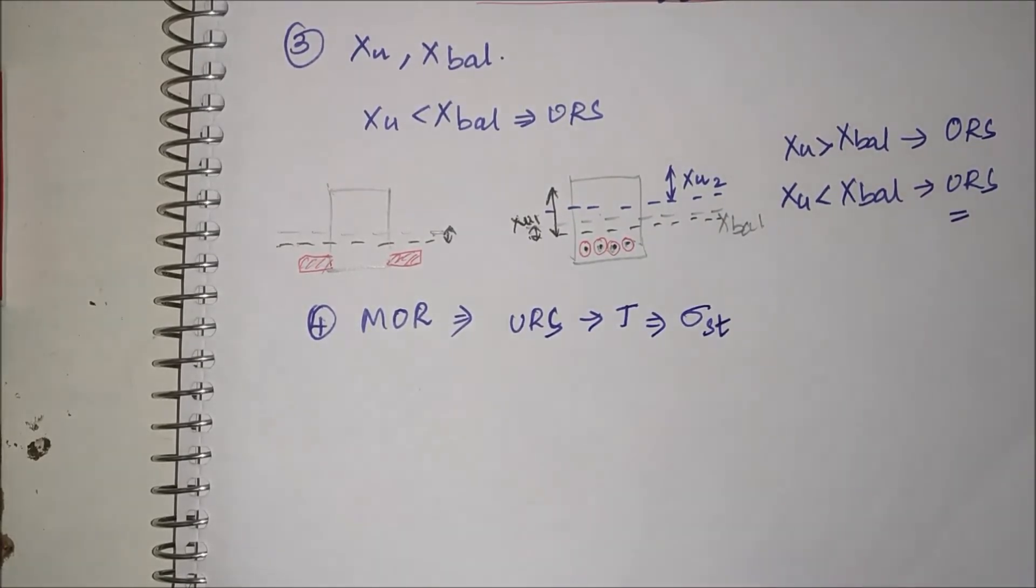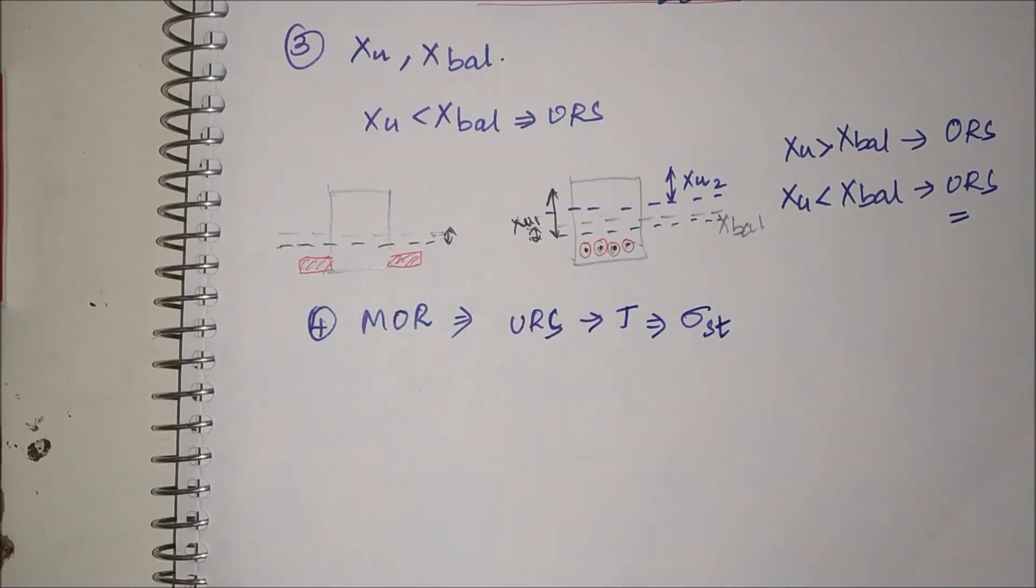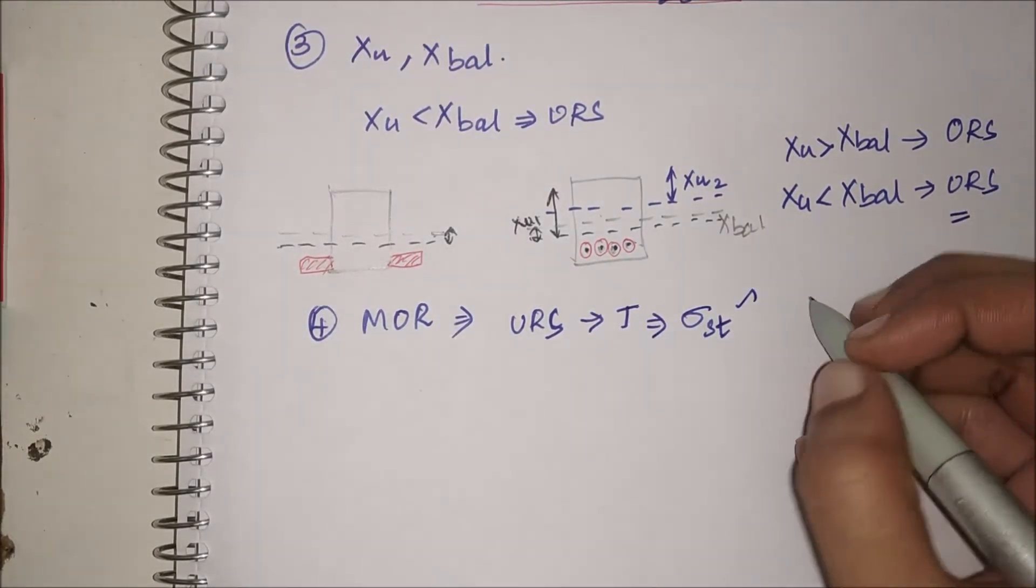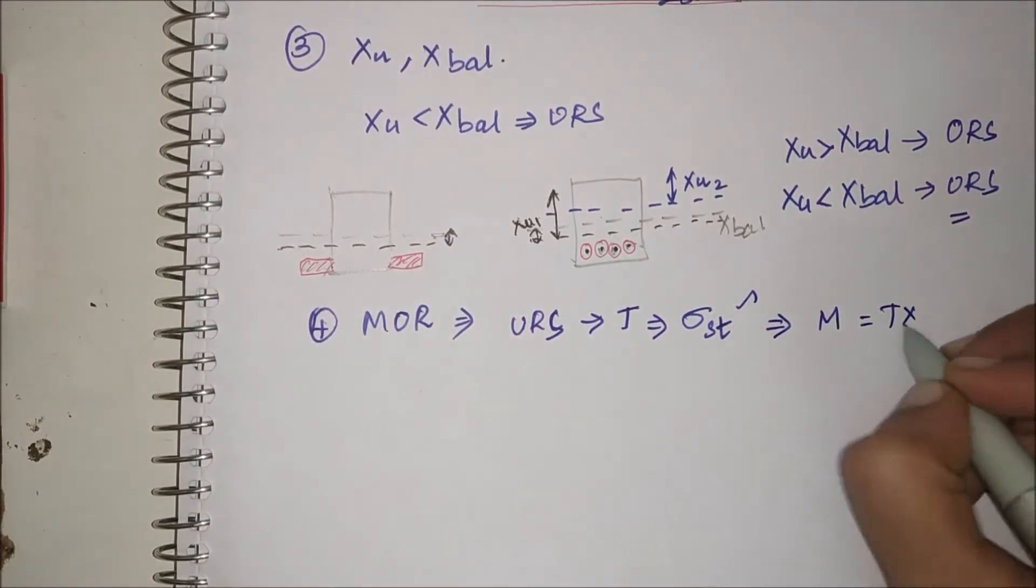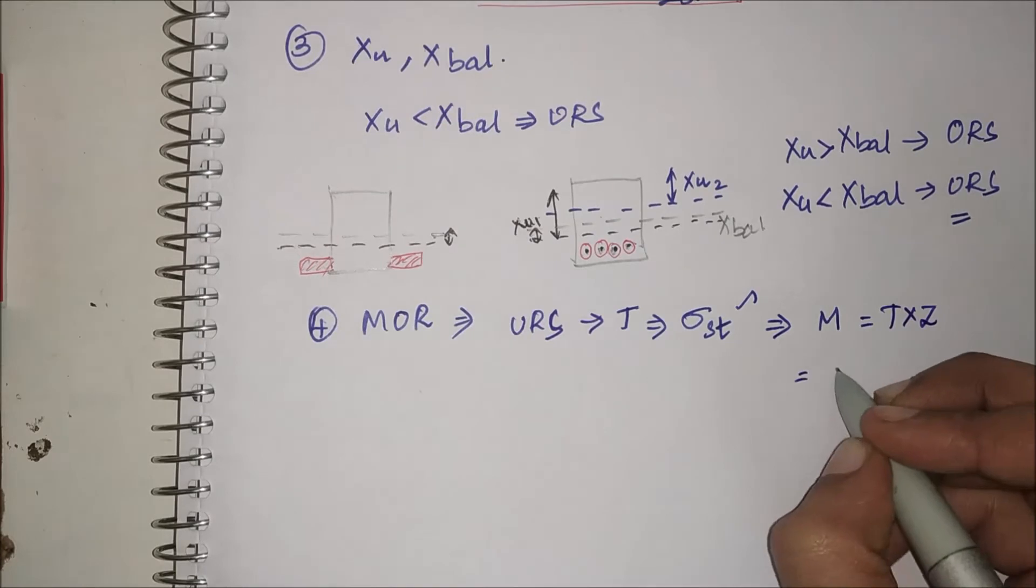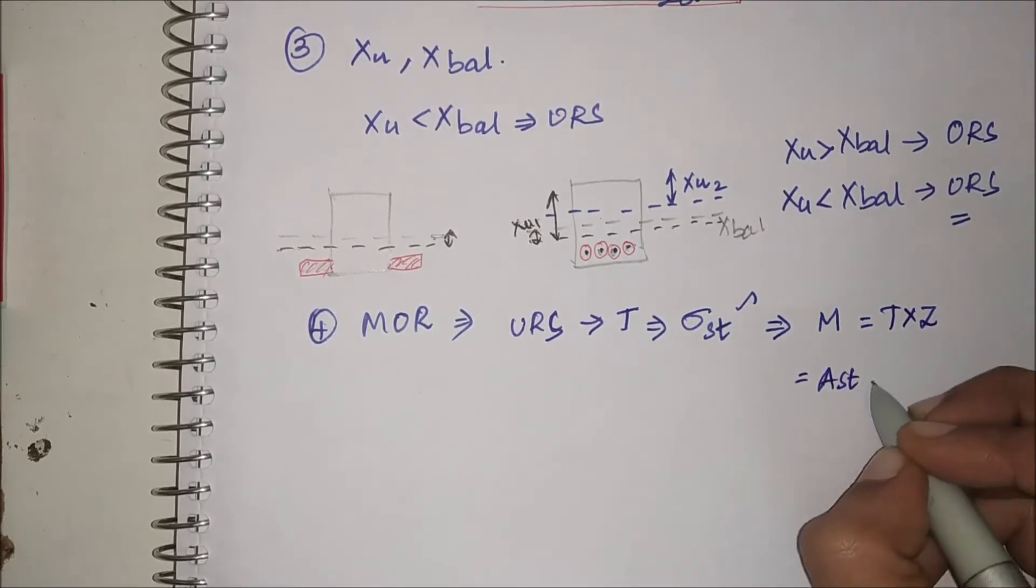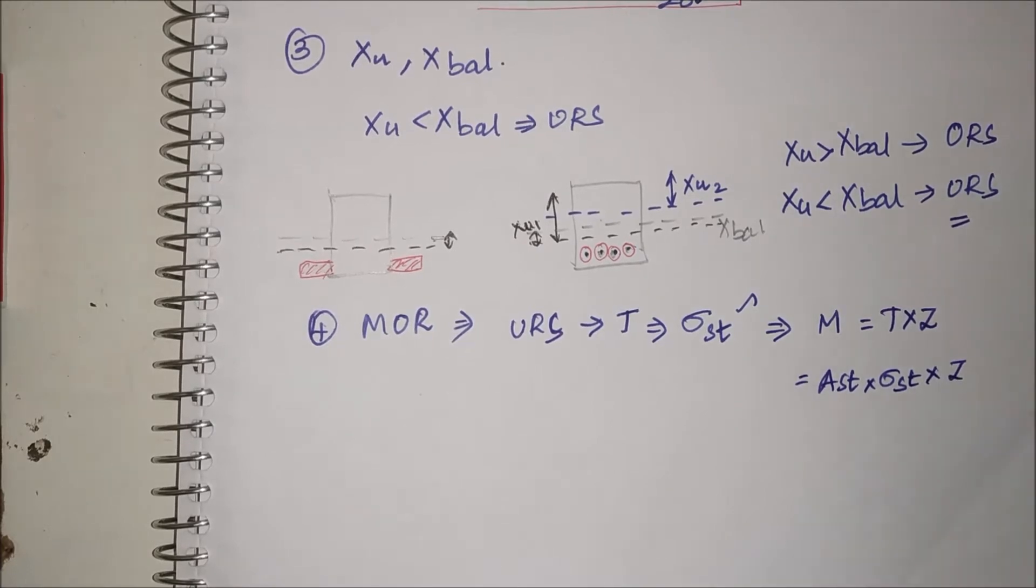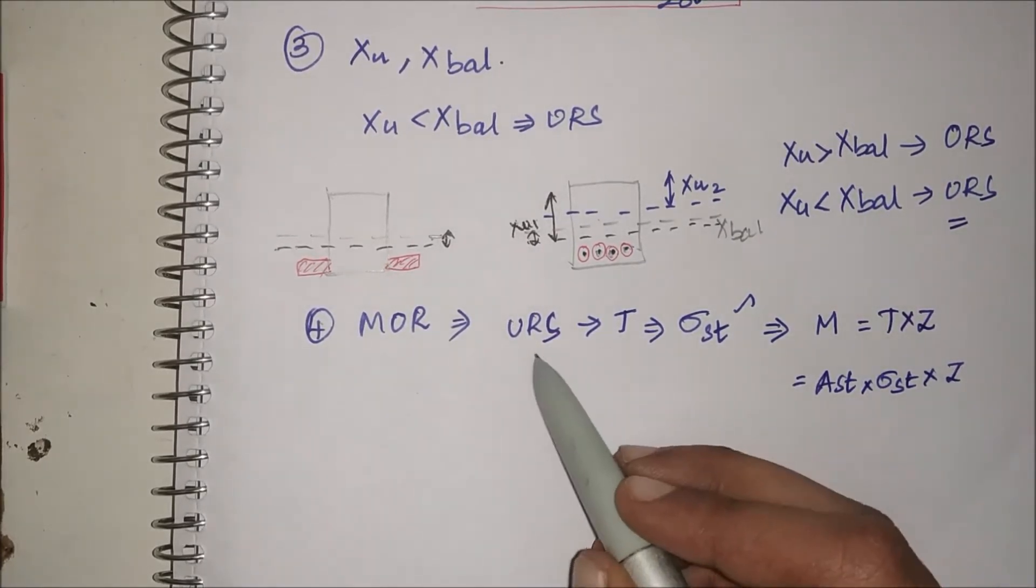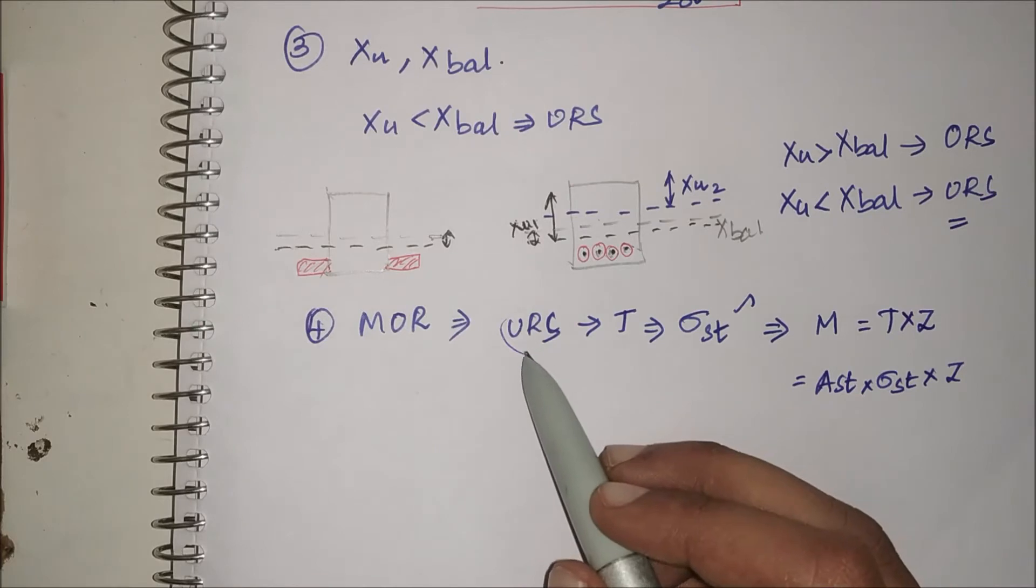So steel fails first, I will know what is the permissible stress in my steel. Therefore, I will go with the formula that M is equal to T into Z, which will be Ast into sigma st into Z. What will be Z this time? I know it is URS, that is under reinforced section.